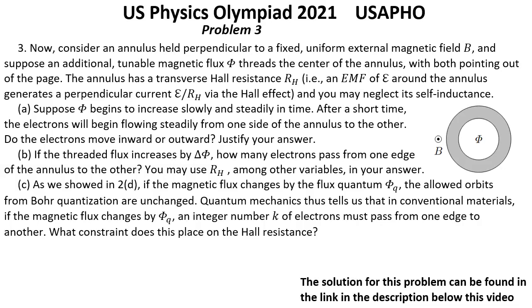Question A: Suppose Φ begins to increase slowly and steadily in time. After a short time, the electrons will begin flowing steadily from one side of the annulus to the other. Do the electrons move inward or outward? Justify your answer.